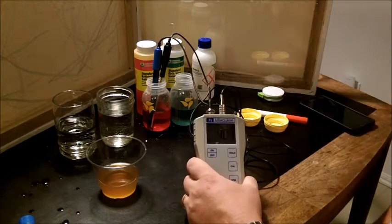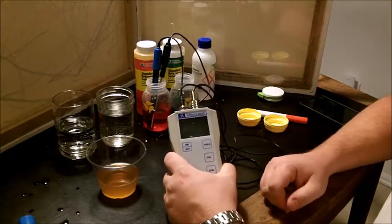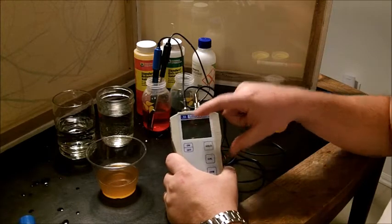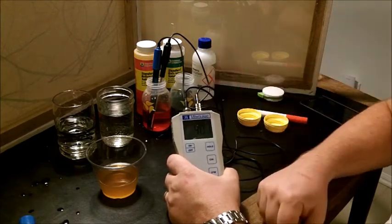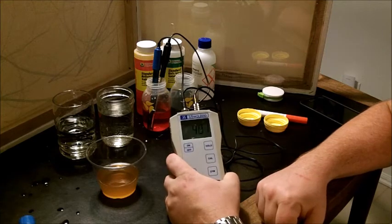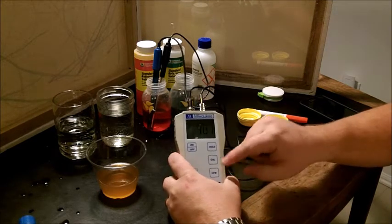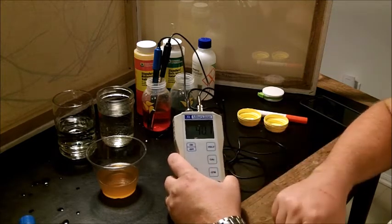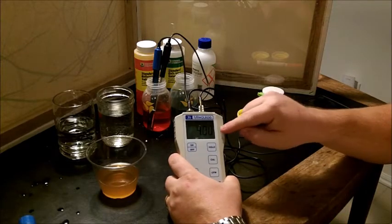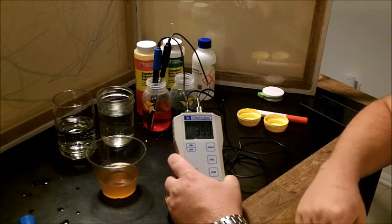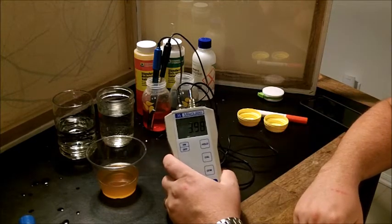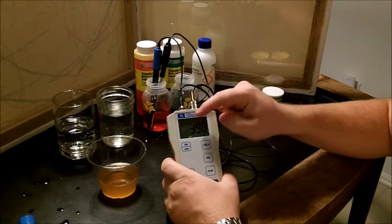About a minute and a half has gone by and the hourglass has stopped flashing. I have 4.01. It's calibrated itself for the 4 pH solution. We'll hit confirm one more time. It stops flashing. Now we're calibrated. It just went to 3.99, 3.98.